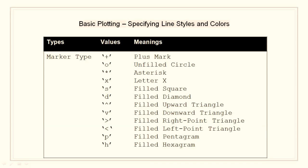We have a few marker styles that are nothing but a shape that will be used to highlight data points in a plot. Most common of them are plus mark, unfilled circle, asterisk, letter x, and so on.